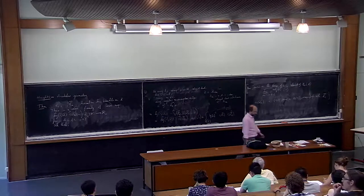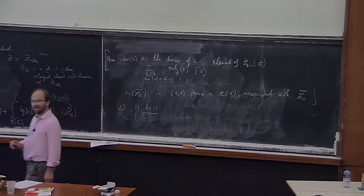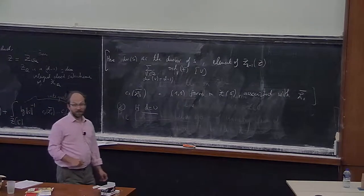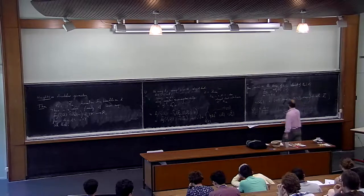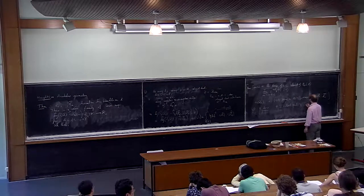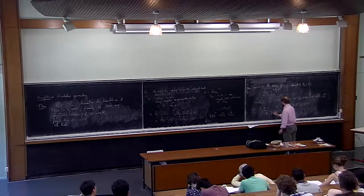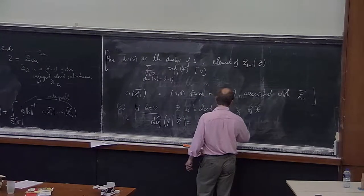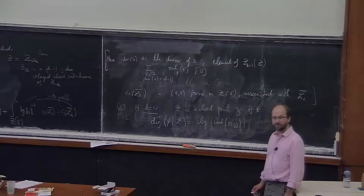You have to start from somewhere, and that somewhere is dimension 0. What is a 0-dimensional cycle? It's necessarily a closed point of the scheme X lying in some vertical fiber. So if g = 0 and Z is a closed point of X, the definition is: the arithmetic degree of the empty product against Z is just the logarithm of the cardinality of the residual field. That's the normalization.